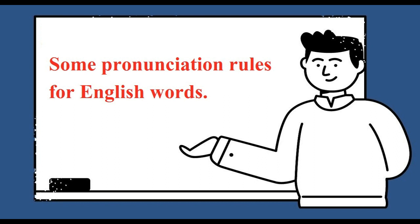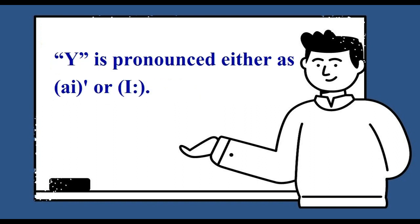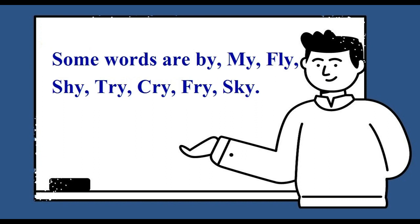Some pronunciation rules for English words: How Y is pronounced in English word. Y is pronounced either as I or I. In a one syllable word, Y is pronounced as I. Some words are: by, my, fly, shy, try, cry, sky.